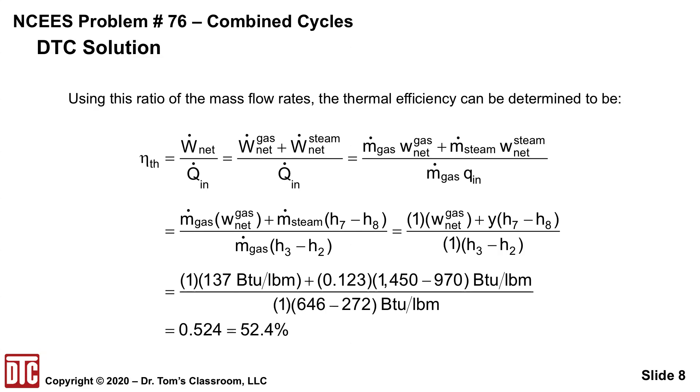The 646 minus 272 is the lowercase q in. And so when you do the arithmetic, you get 52 percent, which is what they get. It's just that the solution is such that with the typos and some other ways in which they approached it, it made a problem that is difficult enough as it is.